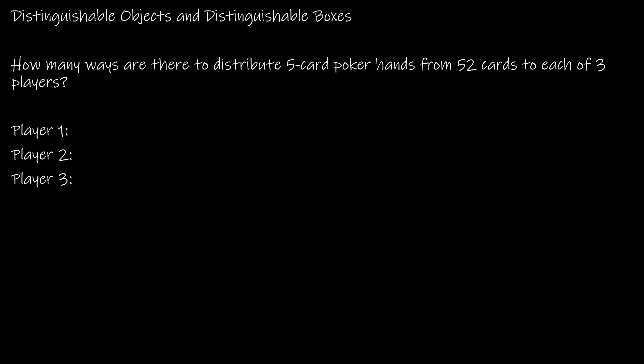Together we're going to take a look at four different questions based on whether the objects are distinguishable and whether the boxes are distinguishable. There are a lot of questions in combinatorics that can be tackled using this same mindset, whether we're talking about boxes, bins, or people.